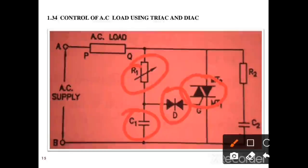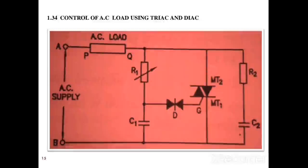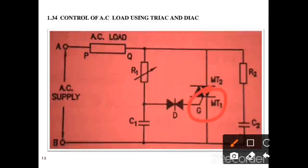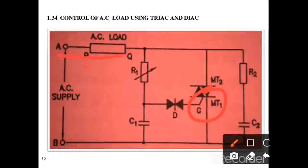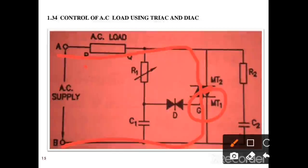The gate-MT1 circuit of the Triac triggers it to fire. During the positive half cycle, when A is positive with respect to B, the load current flows from A through the load, through MT2 of the Triac, and back to B. This is the direction of load current when A is positive with respect to B.